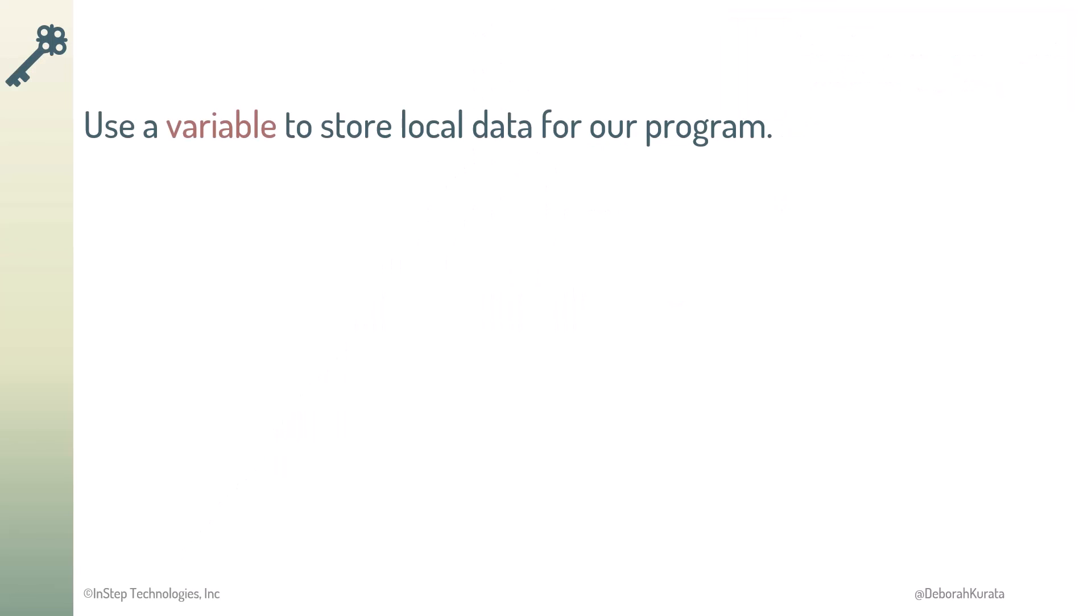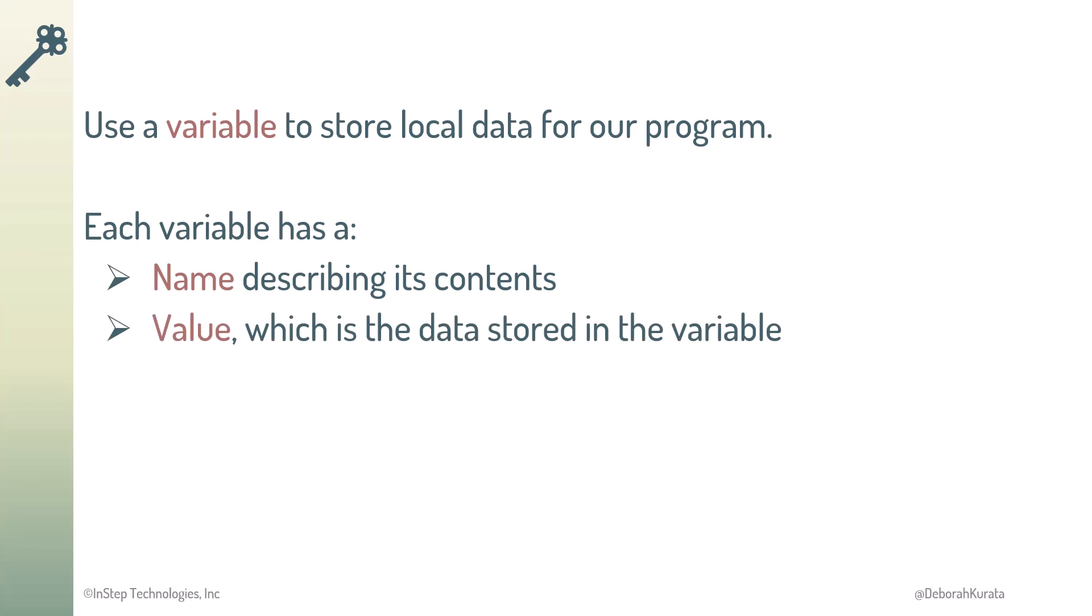So, we use a variable to store local data for our program. Our program uses that data to perform its instructions and for display to the user. Each variable has a name describing its contents, a value, which is the data stored in the variable, and a data type, which is the kind of data stored in that variable.